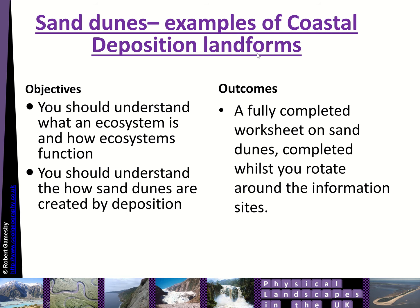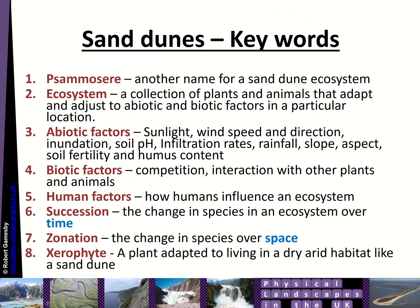We're going to be looking at sand dunes as an example of coastal deposition landforms. You'll need to know some key words. A psammosere is another name for a sand dune ecosystem. Ecosystems — which you might have covered in biology — are a collection of plants and animals that adapt and adjust to abiotic (non-living) and biotic (living) factors in a particular location. Your abiotic factors — the non-living things — include sunlight, wind speed and direction.